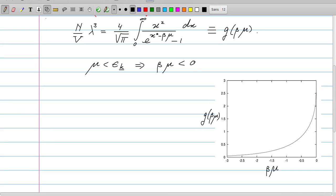Here is a plot of the function g(βμ) as a function of βμ, and you see that it's indeed only drawn for negative values. It doesn't exist for positive values, and it hits in fact a maximum value here which is around 2.61.